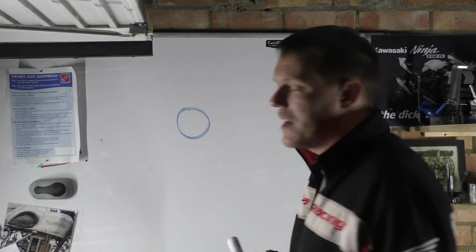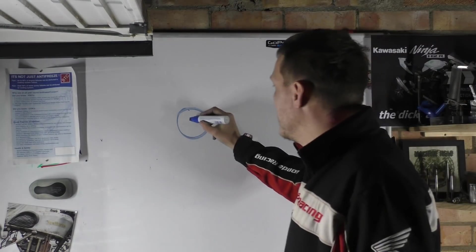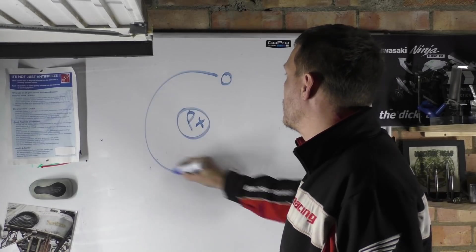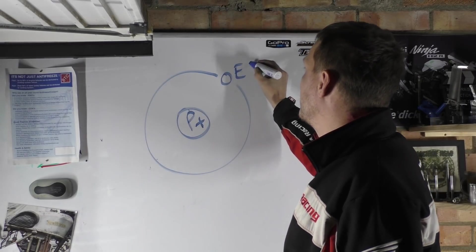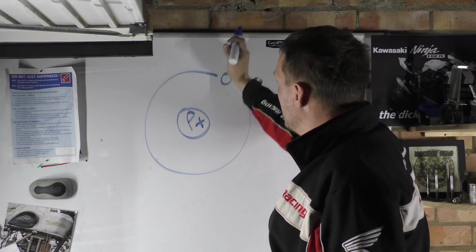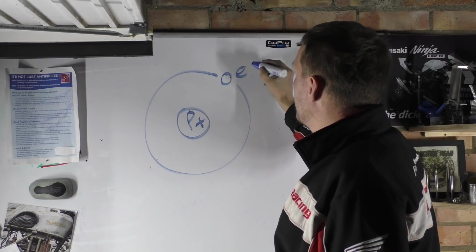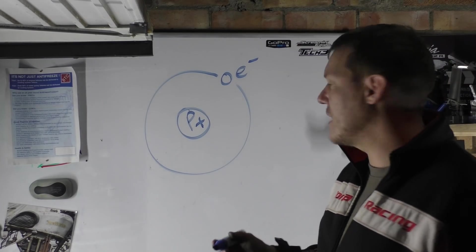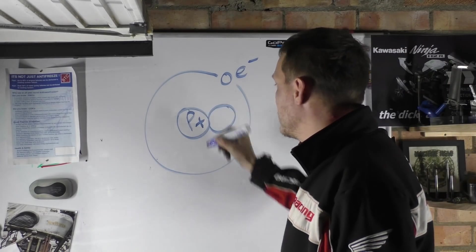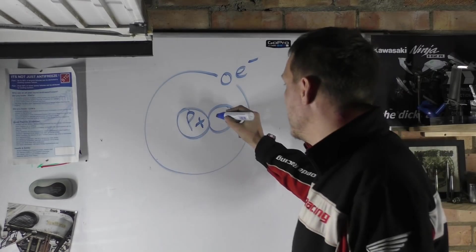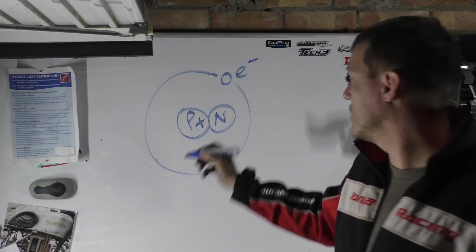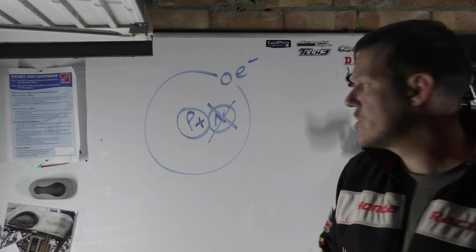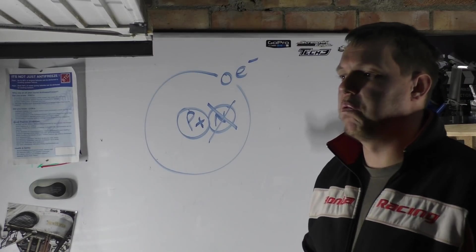Why do atoms repel each other? Let's go with hydrogen because it's really easy. Atoms have protons, which are positive, and then they have electrons that are negative. When you get to more complicated atoms like deuterium and so on, you also have neutrons.